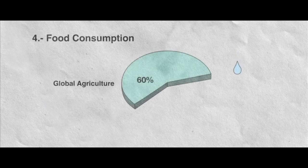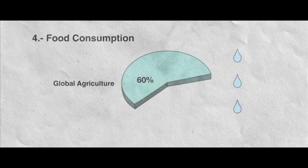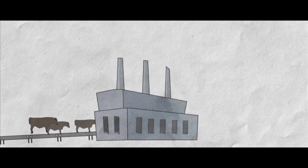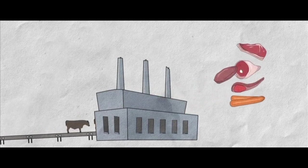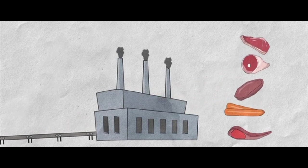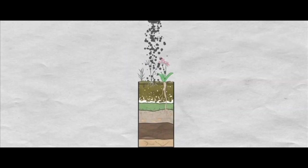Four, food consumption. Global agriculture uses 60% of the total fresh water in the world. Food production today has to be technified to meet the large demand, resulting in burning fossil fuels, using chemical nutrients and pesticides.